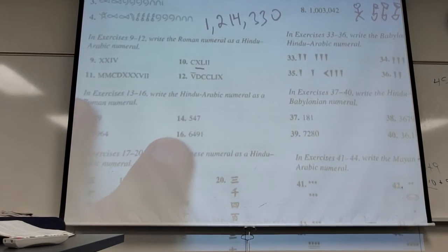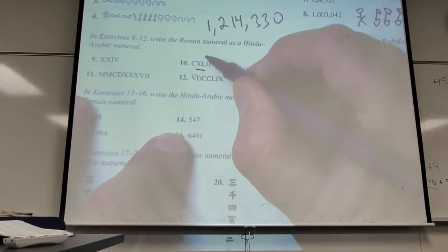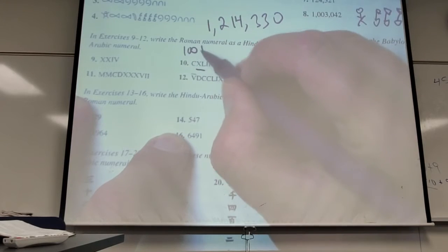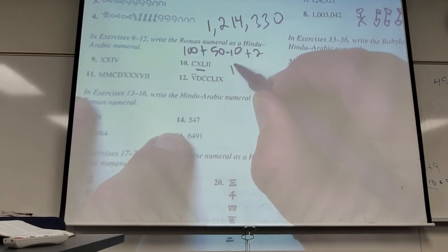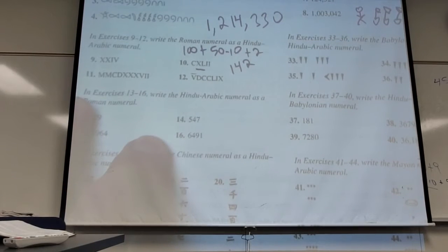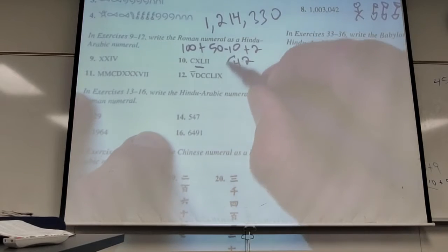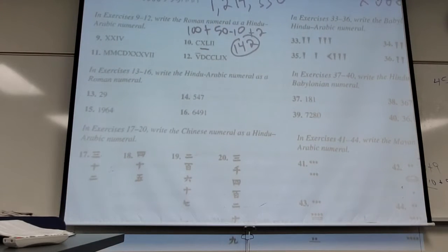Romans use an additive system. But if you have a pair where the numeral in front is smaller than the next one, that's subtraction. It's the very first thing you do. So I got to worry about this first. So what's the C? 100. And what's XL? 40. Yeah, it'll be 50 minus 10.